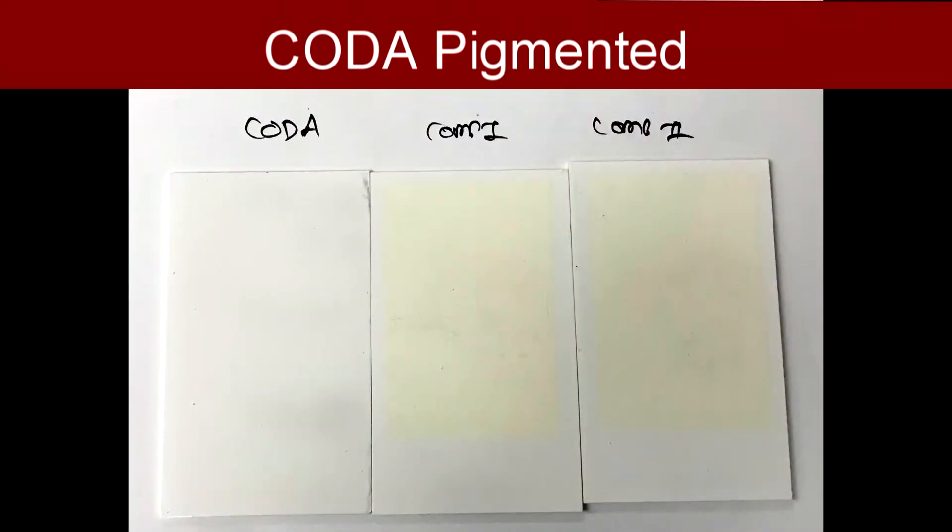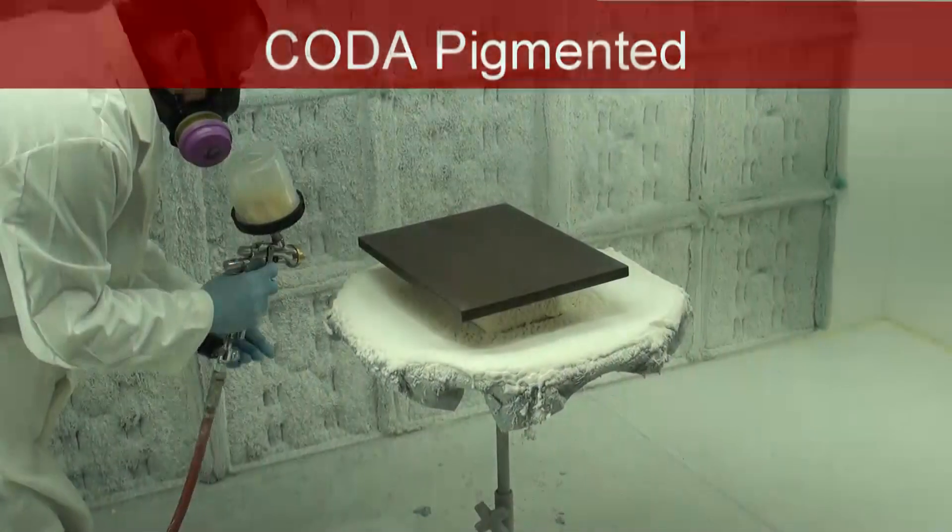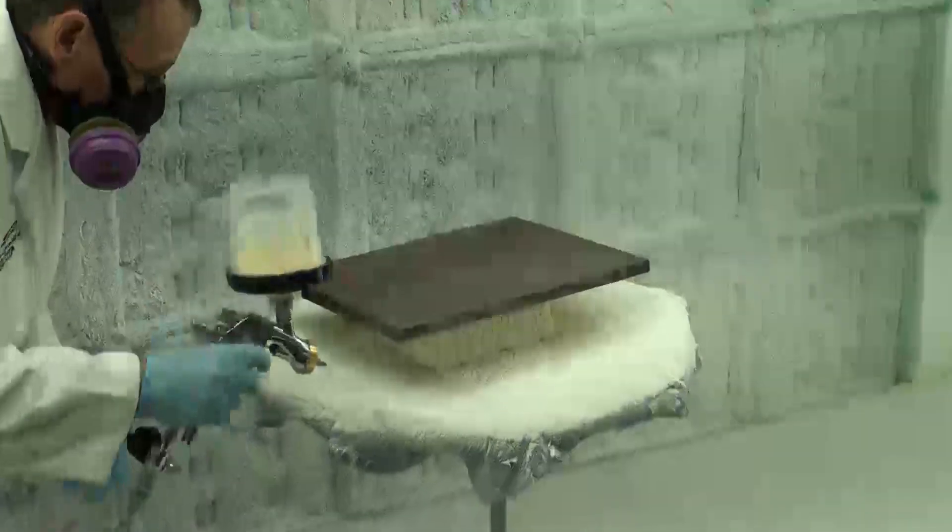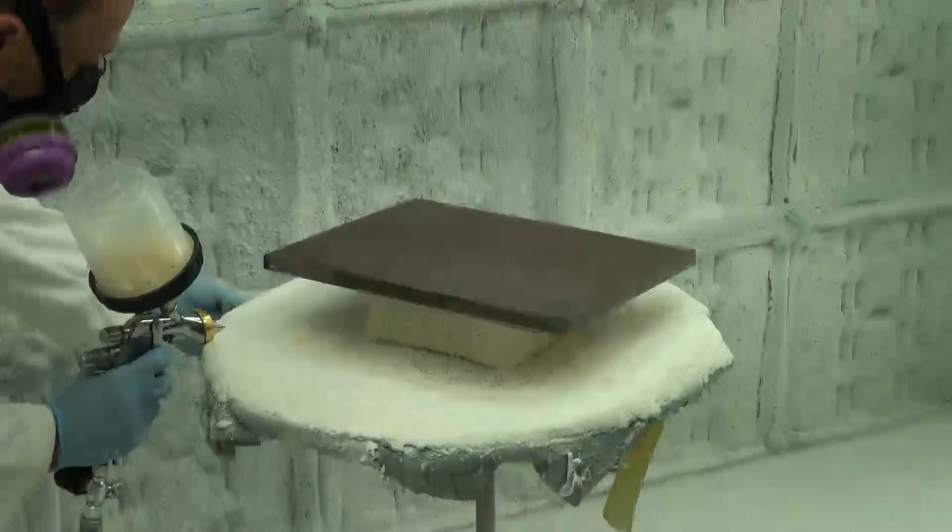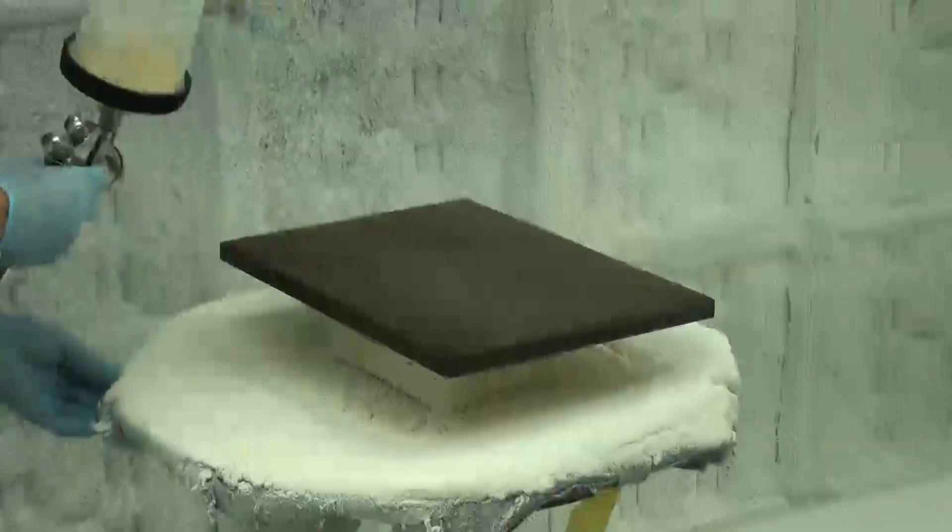Based on these results, we can confidently state that the COTA series of 2K polyurethanes has remarkable resistance to yellowing.